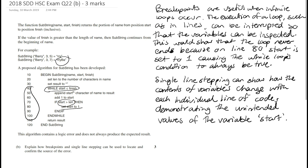That's how breakpoints and single line stepping can be used to locate and confirm the source of the error in this algorithm — the particular error that causes an infinite loop. Let's now move on to part c of this question, where we need to modify the algorithm so it produces the correct result. We're going to take a look at that in the next video. Thanks for watching.